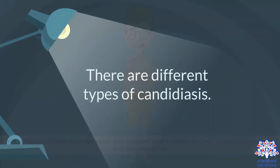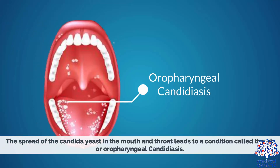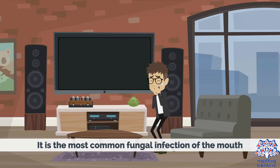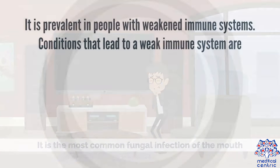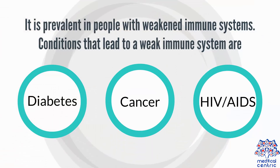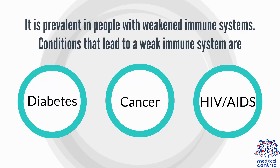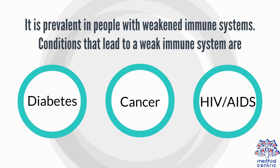There are different types of Candidiasis. The spread of the Candida yeast in the mouth and throat leads to a condition called Thrush, or Oropharyngeal Candidiasis. It is the most common fungal infection of the mouth, prevalent in people with weakened immune systems — such as those with diabetes, cancer, HIV, and AIDS.